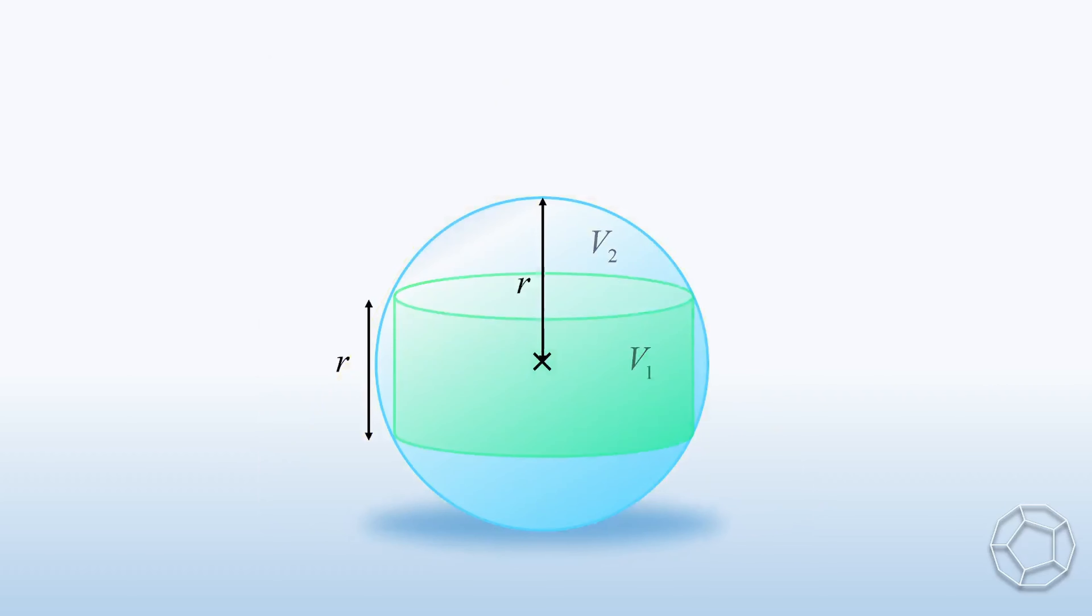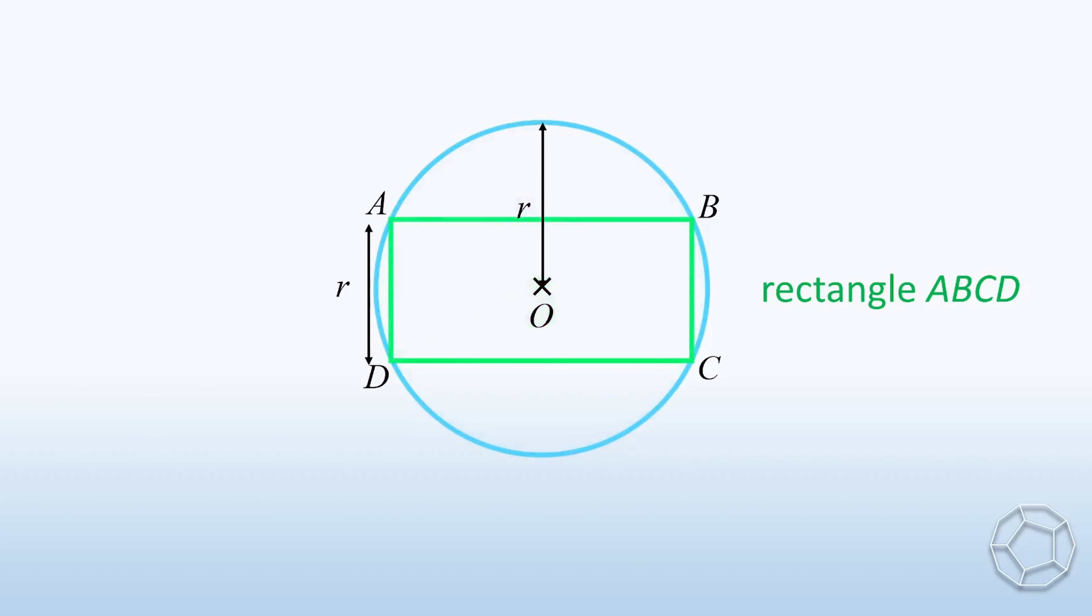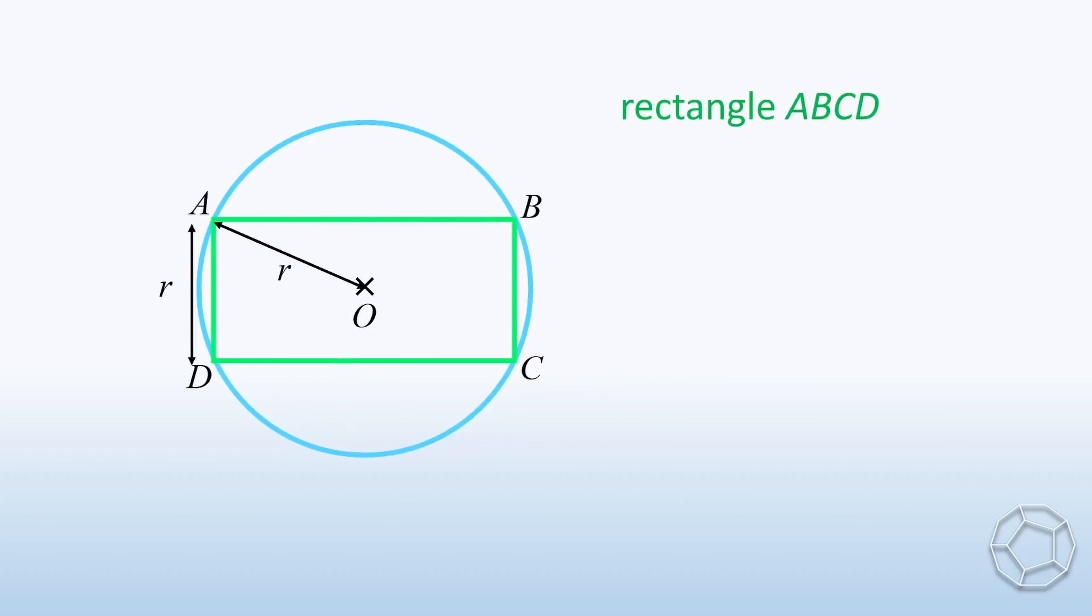We take the side view. Then they look like a circle with center O and a rectangle ABCD. Clearly, OA is equal to the radius of the sphere. We let E be the midpoint of AB, so that AE is the base radius of the cylinder.